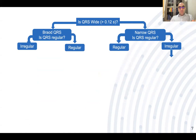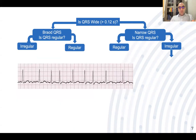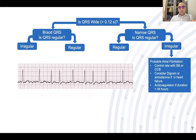For irregular narrow complex tachycardia, most probably this is atrial fibrillation. As treatment, control the heart rate by giving a beta blocker or calcium channel blocker. Also consider digoxin or amiodarone if the patient is in heart failure. If the duration of arrhythmia or palpitations is more than 48 hours, consider anticoagulant medication.